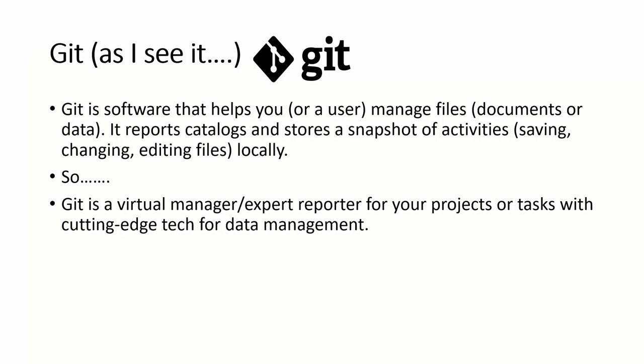Git reports, catalogs, and stores a snapshot of activities. Whatever you do isn't hidden — it actually knows your steps and your actions, it knows when you did it and how you did it. So basically, Git is a virtual manager that's very good at its job, reporting your projects with cutting-edge software data for managing them.